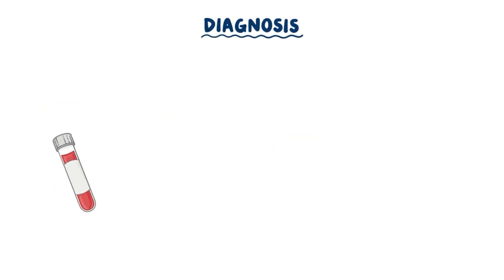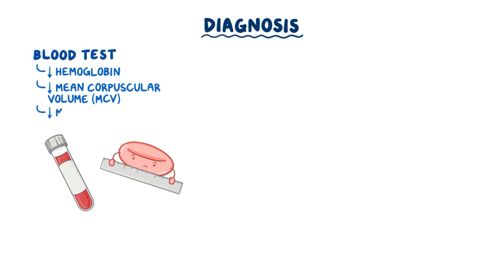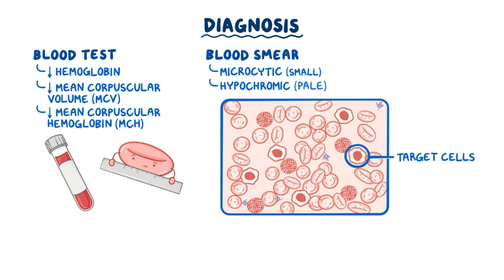Diagnosis starts with a routine blood test that shows low hemoglobin levels, decreased mean corpuscular volume, or MCV, and low mean corpuscular hemoglobin, or MCH. The peripheral blood smear shows microcytic, or small, and hypochromic, or pale, red blood cells. There are also target cells, which are small red blood cells that look like bullseyes due to scrunching up of excess cell membrane. With moderate alpha-thalassemia, there may be golf-ball-like red blood cells due to precipitated HbH molecules.